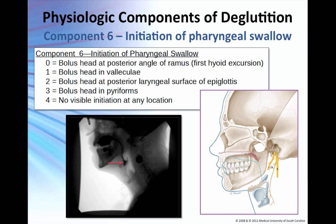Initiation of the pharyngeal swallow can be a little tricky. You base your decision on the location of the bolus head or leading edge at the time of that first brisk superior anterior hyoid trajectory. You have to look at the relationship between the location of the bolus head and the first hyoid movement. I put my cursor on the hyoid and look at the first frame when the hyoid moves briskly.